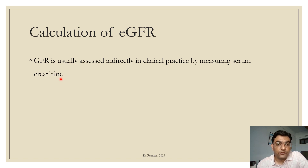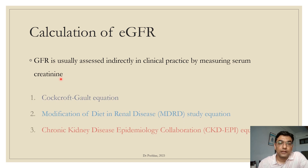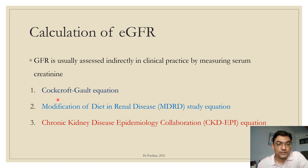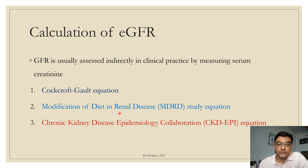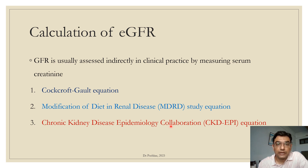There are three important equations for estimating GFR. The first is the Cockcroft-Gault (CG) equation, a traditional and older formula. The newer ones are the MDRD — Modification of Diet in Renal Disease — equation, and the CKD-EPI — Chronic Kidney Disease Epidemiology Collaboration — equation. The MDRD and CKD-EPI are the ones most commonly used today.